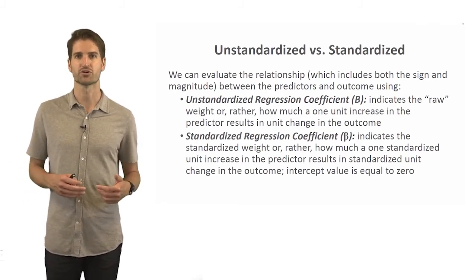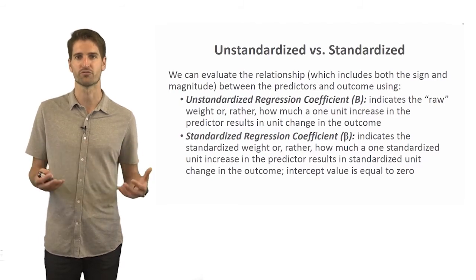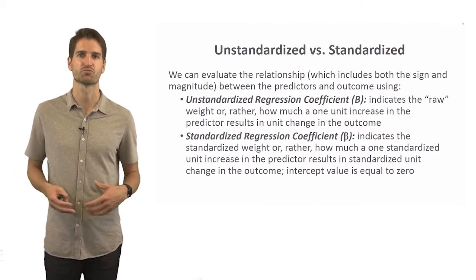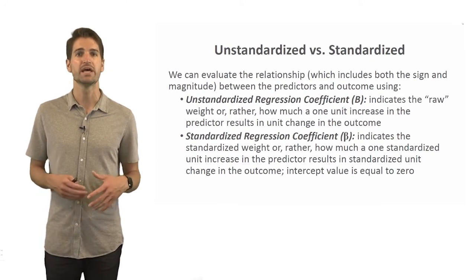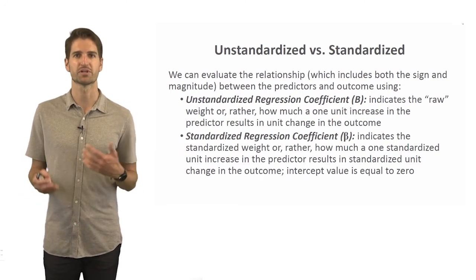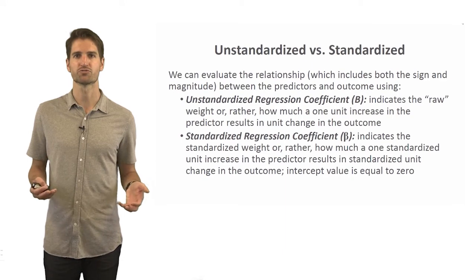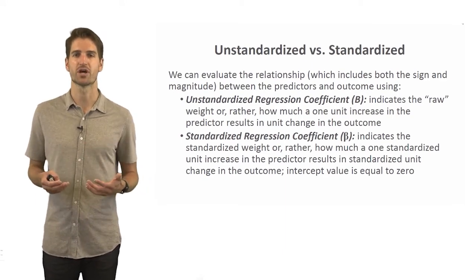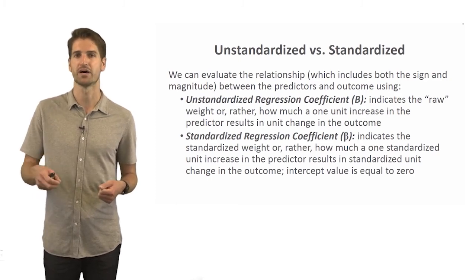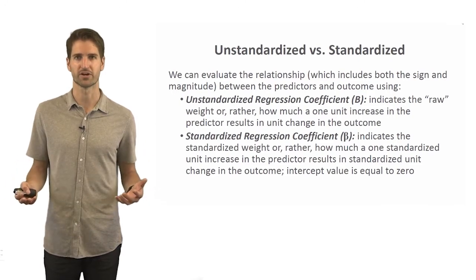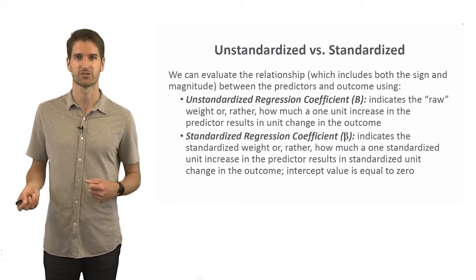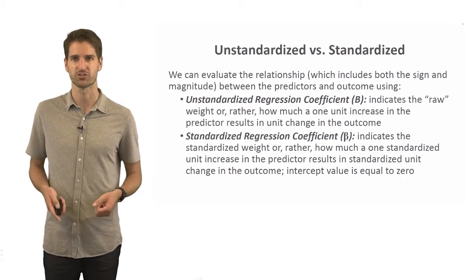A standardized regression coefficient indicates how much a one standardized unit increase in the predictor results in a standardized unit change in the outcome variable. With standardized regression coefficients, the intercept value is equal to zero, so we typically ignore the y-intercept. With an unstandardized regression coefficient, we use language like: 'for every one unit increase in this predictor variable, we have a blank unit increase in the outcome variable,' keeping the original scaling of those variables.